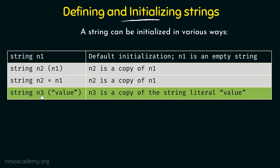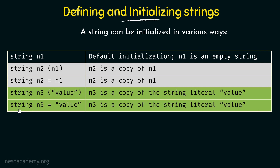Next we have String n3 and within parenthesis, within double quotes, we have the word value. This means n3 is a copy of the String literal value — that literal is being stored inside this String. Similarly, we can write String n3 equal to value within double quotes without the parenthesis, and here also n3 is a copy of the String literal value. These two are equivalent, and n3 would hold the literal value value in both cases.